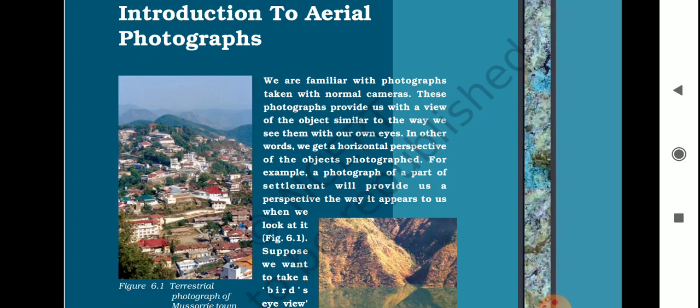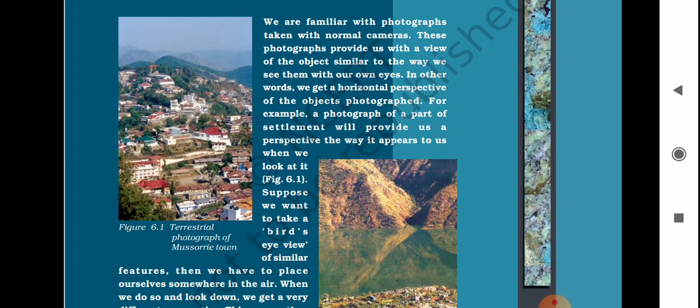When we click pictures, photographs are generally taken with normal cameras and they provide us a view of the object similar to what we see with our own eyes. From cameras, we get a horizontal perspective of the object, and a photograph of a part of a settlement provides us the image as it appears when we look at it.